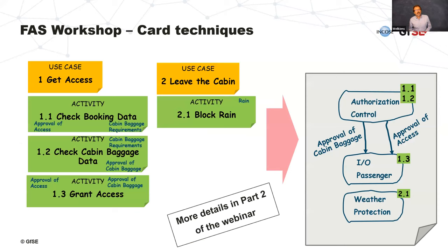For various reasons, working on a model is usually not a good task to do together with many people in a workshop. But workshops are important — bringing together different stakeholders, requirements engineers, and architects. With a few simple rules, the use case analysis and derivation of the functional architecture can also be performed on physical cards in a workshop. We will cover more about this in Part 2 of the webinar.